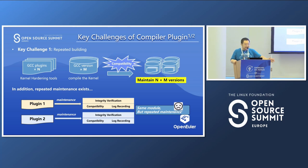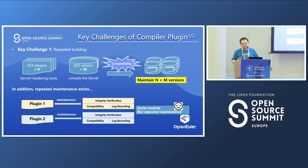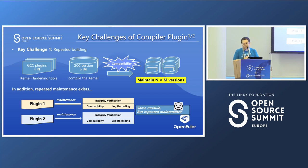But compiler plugins work pretty nicely, yet there are still some challenges for us. The first one is repeated building. This is the case in kernel development — some teams work on plugins to harden the kernel and enhance security capability. But GCC has multiple versions, so the user needs to create multiple plugins for multiple GCC versions to ensure there are no incompatibility issues. At the same time, not only compatibility, but also logging needs and integrity verification — all those common capabilities need to be created for different plugins again and again.